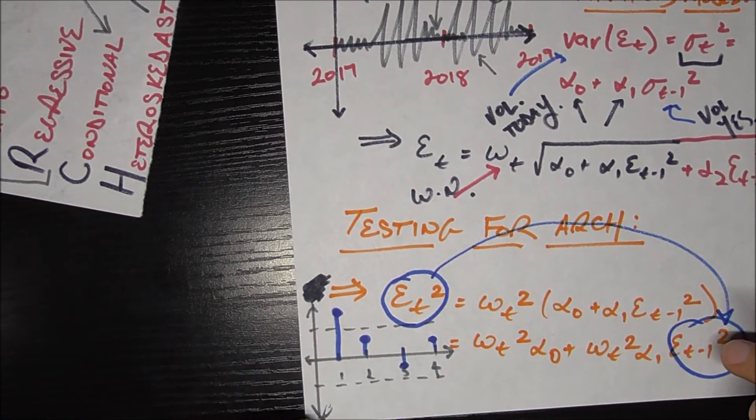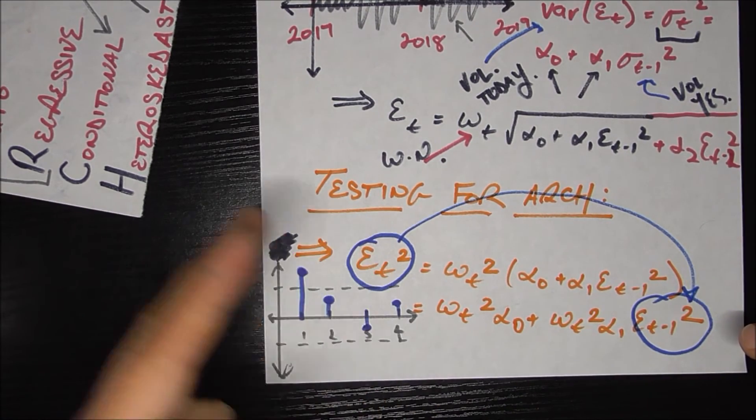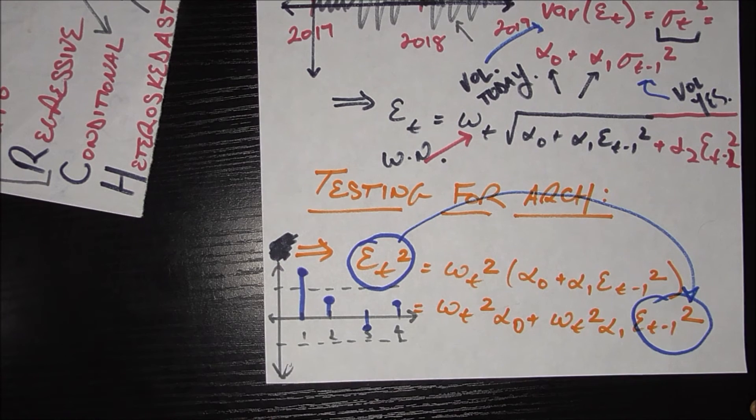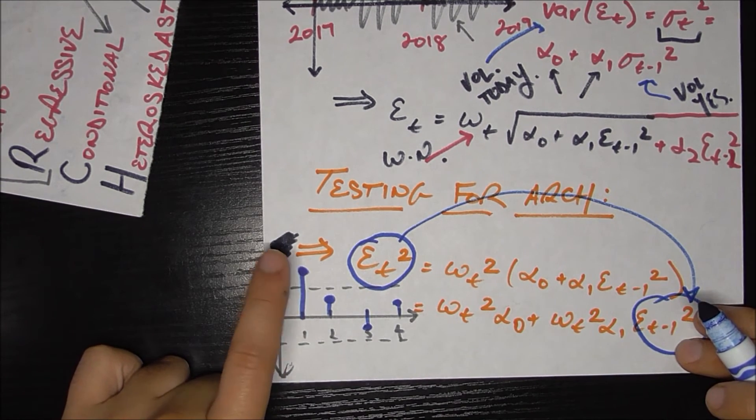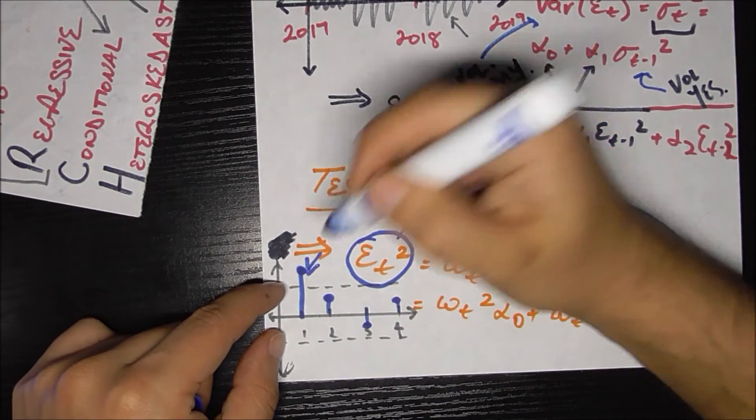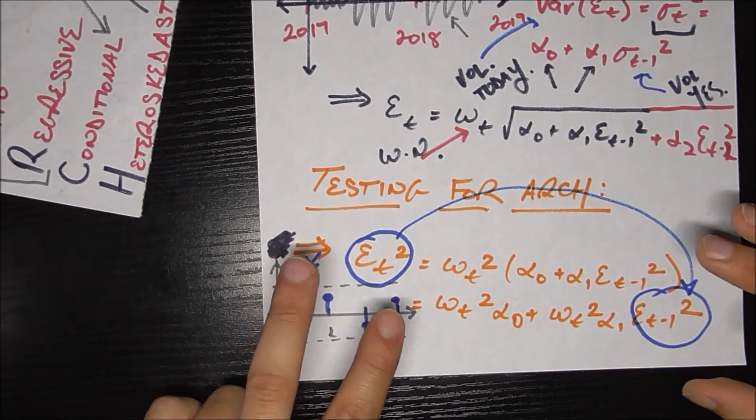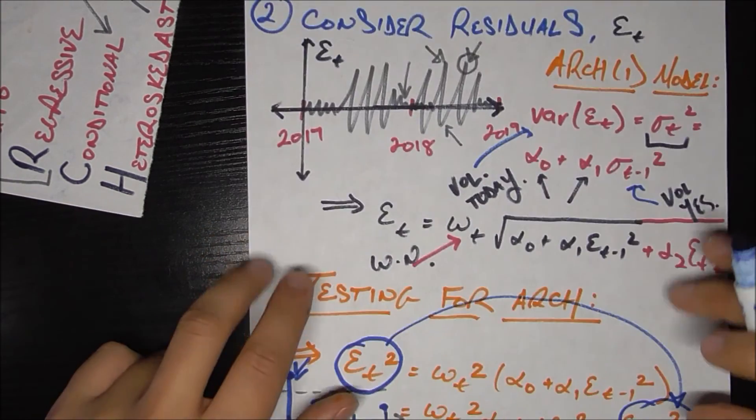And so since we're using this autoregressive type thing, we can make a correlogram, we can do this correlogram here, which basically measures the correlation between something today and its same value, same time series yesterday. And we should see that the lag at one is significantly different from zero, which is why it's outside these bands, right? So it's above this line. That's what we should expect to see if our residuals actually are well modeled by an ARCH(1) process.